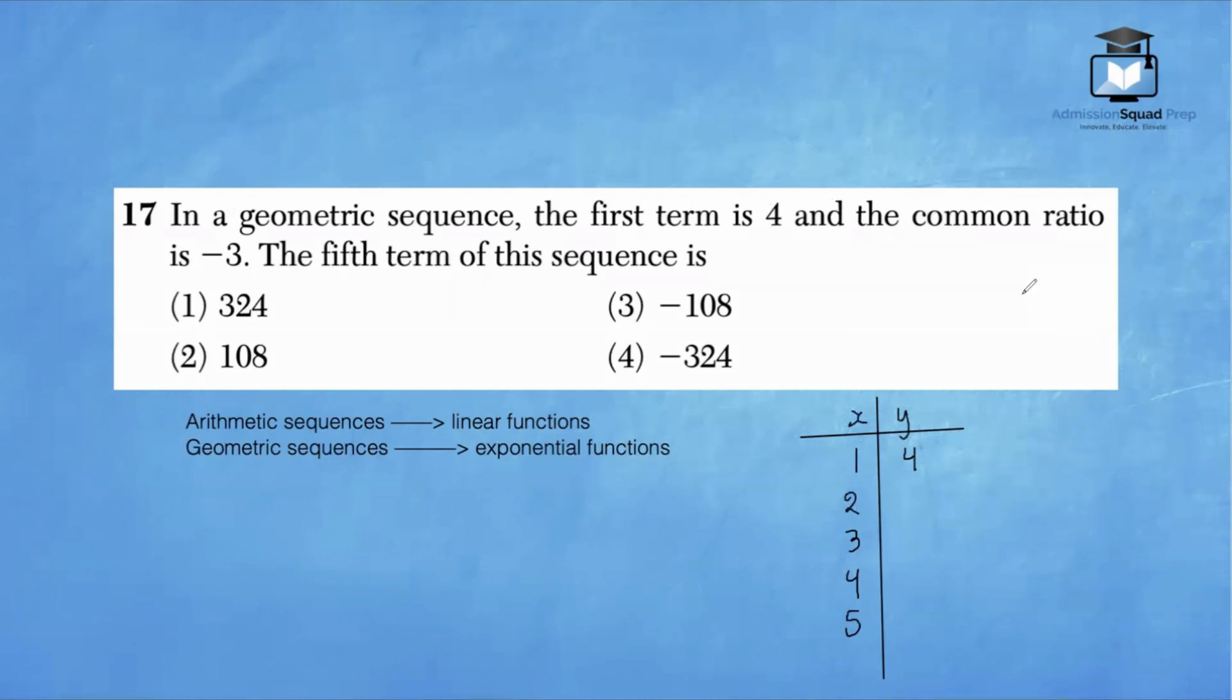So because the common ratio is negative 3, we can go ahead and multiply 4 by negative 3, and we'll get negative 12. Then we multiply negative 12 by negative 3, and we'll get 36. Then we'll multiply 36 by negative 3, and we'll have negative 108. Finally, we're going to multiply negative 108 times negative 3, and we'll have positive 324. So our fifth term is going to be 324.